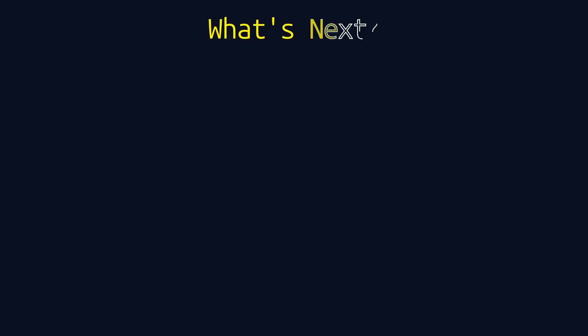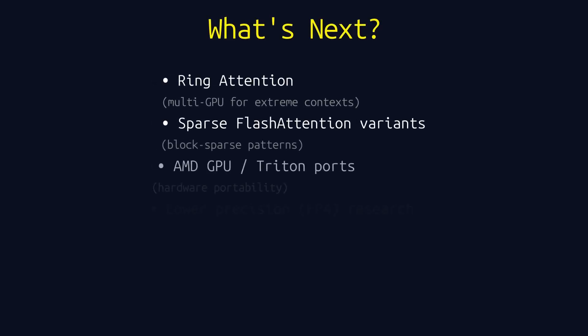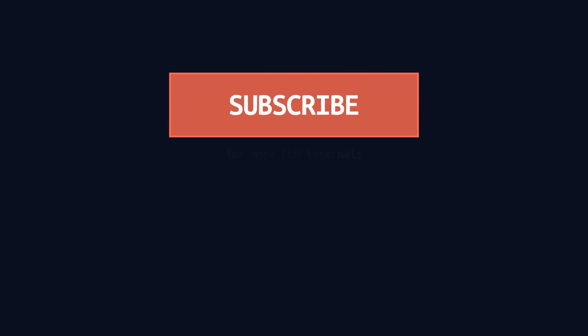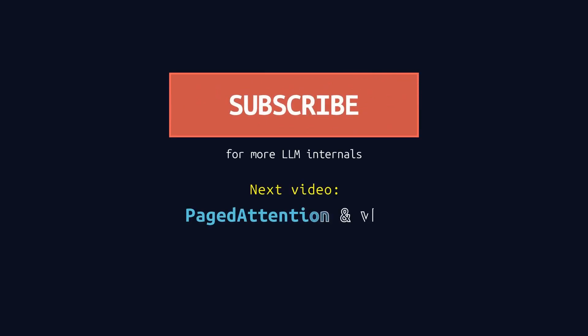What's next for Flash Attention? Ring attention extends it to multiple GPUs for extreme context lengths. Sparse Flash Attention variants handle block sparse patterns. Ports to AMD GPUs via Triton are in progress, and researchers are exploring even lower precision with FP4. If you want to learn more about LLM internals, please subscribe. Next up: Paged Attention and VLLM, which builds directly on Flash Attention to manage the KV cache in production. Thanks for watching.